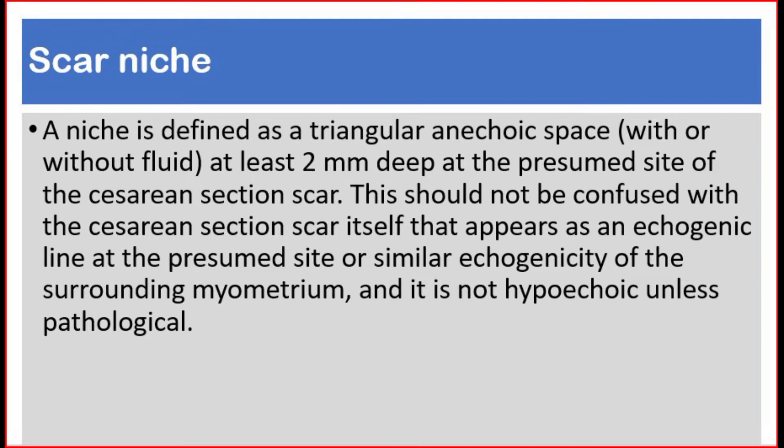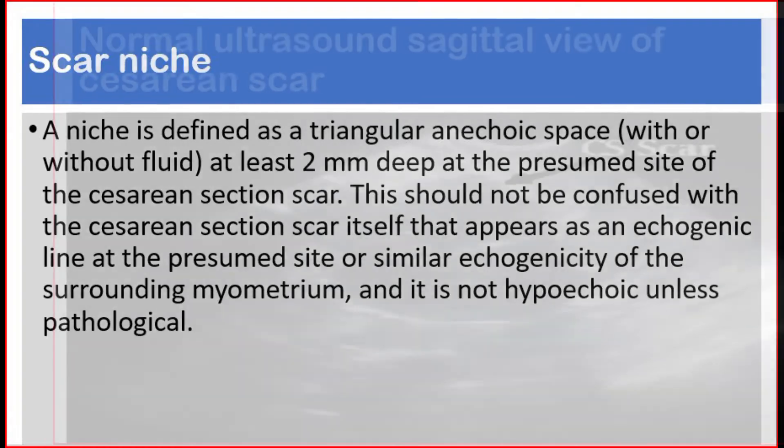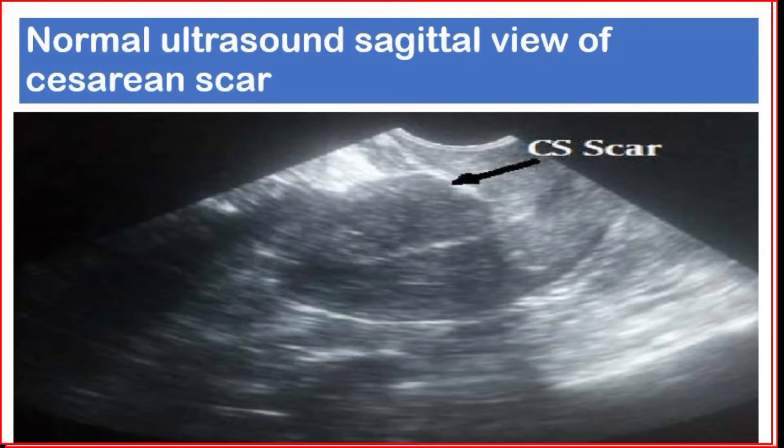A scar niche is defined as a triangular anechoic space with or without fluid, at least two millimeters deep, at the presumed site of the caesarean section scar. This shouldn't be confused with the caesarean section scar itself, which appears as an echogenic line at the presumed site or with similar echogenicity of the surrounding myometrium, and is not hypoechoic unless pathological.